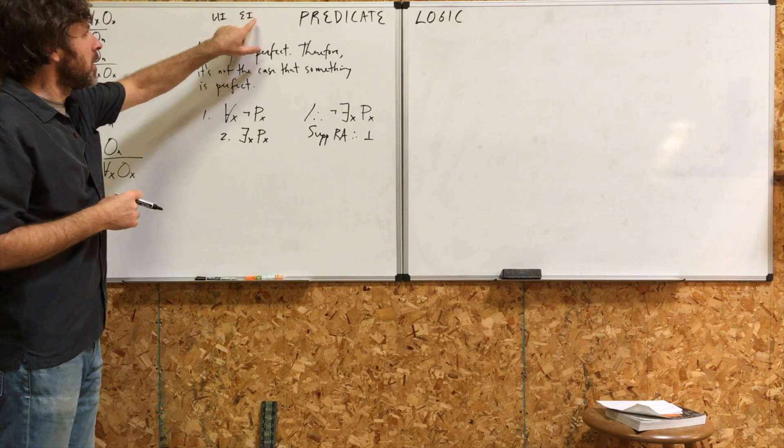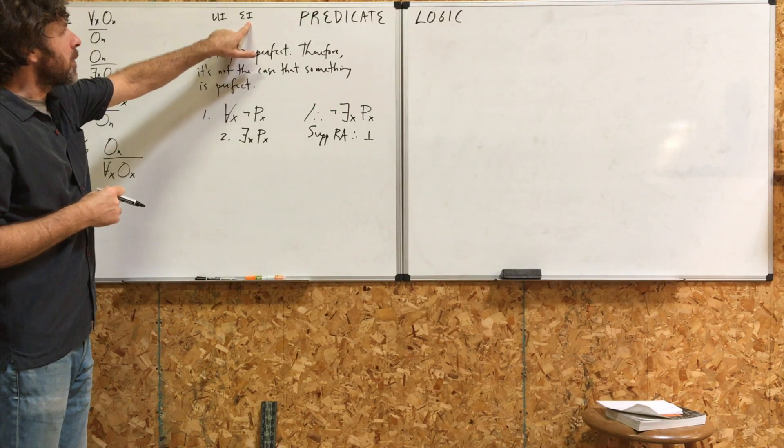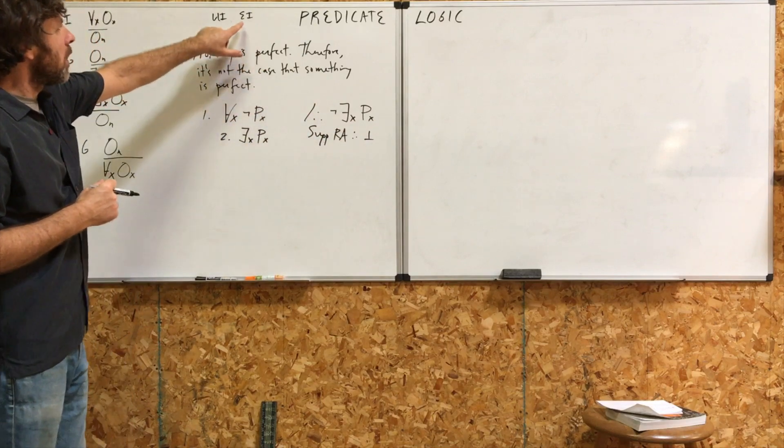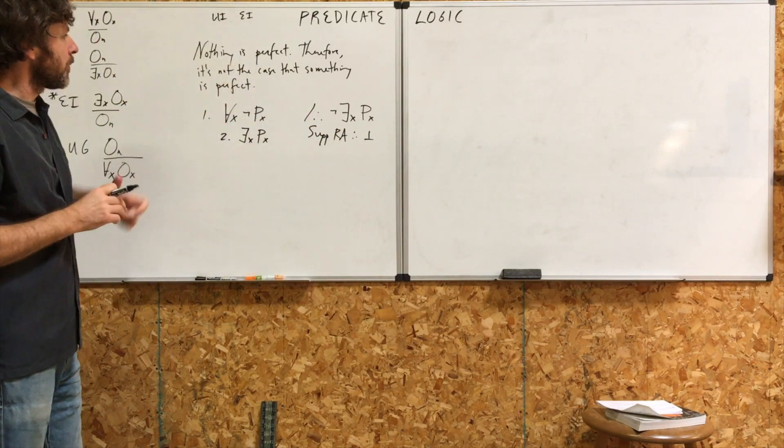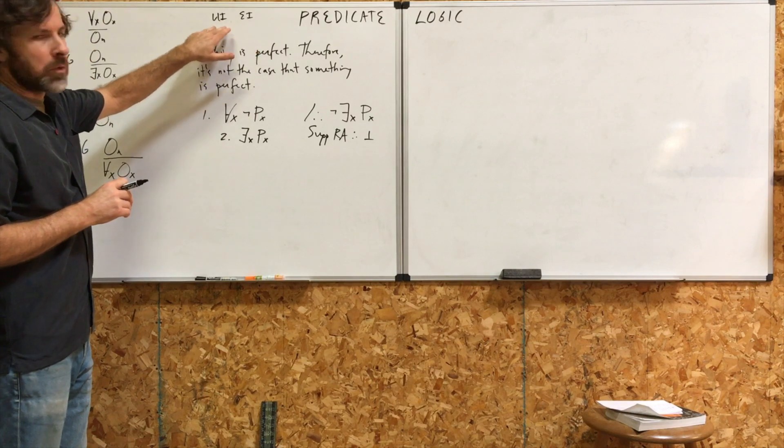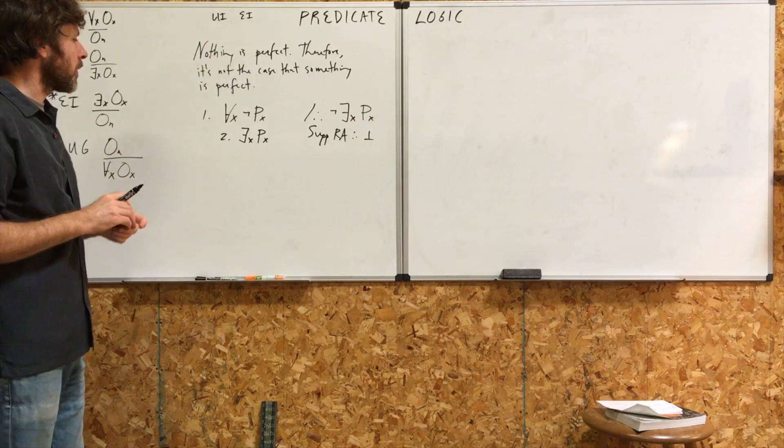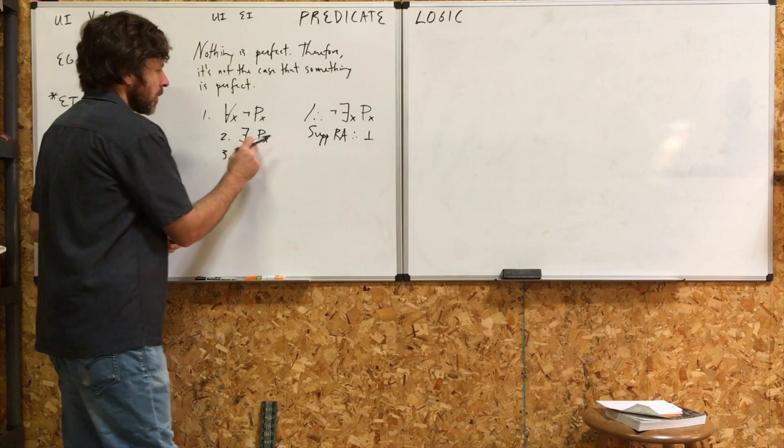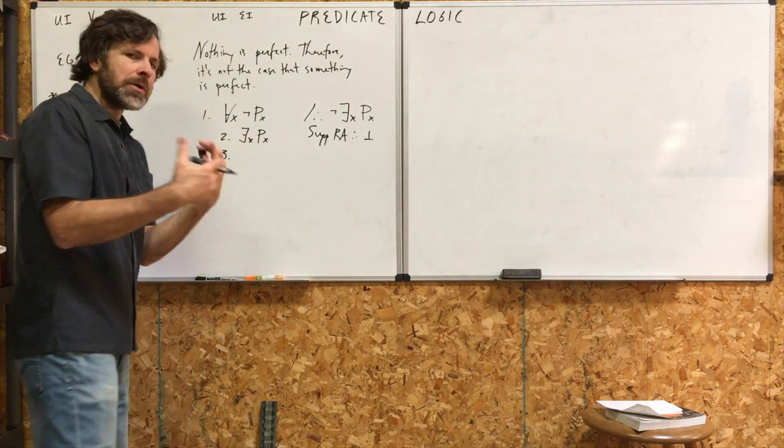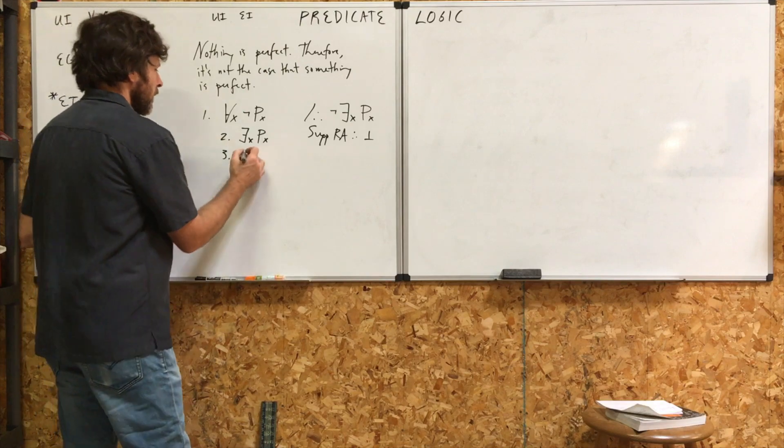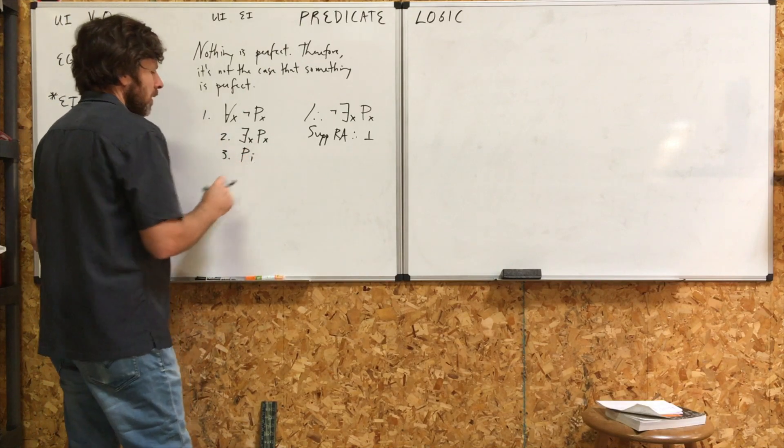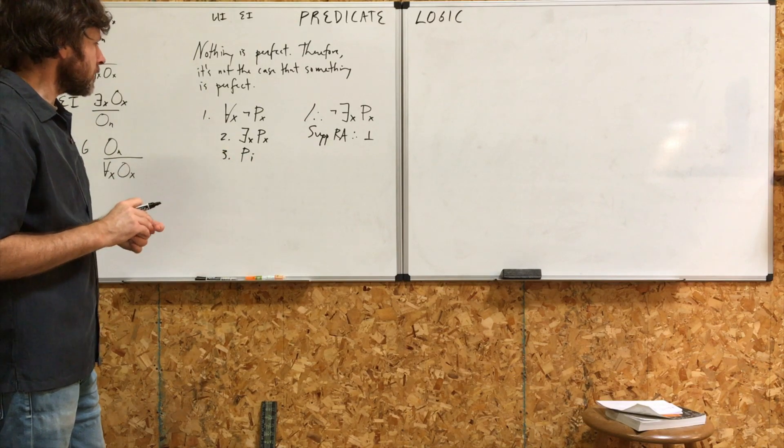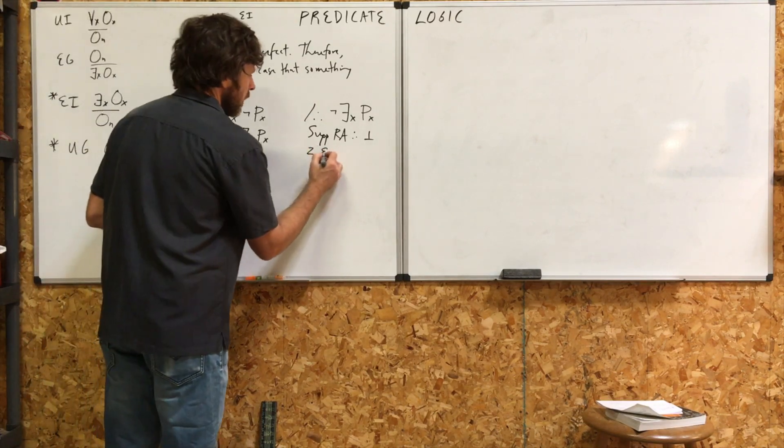There are some restrictions with EI. Remember, whatever individuals introduced by EI cannot occur in the conclusion. Well, it won't. It's not a worry. Also, it has to be new to the proof. So, since we have to use both of these rules, let's do EI first here. So, if something is perfect, then some arbitrary individual is perfect. Let's call that lowercase i, pi. It's right here, two EI.